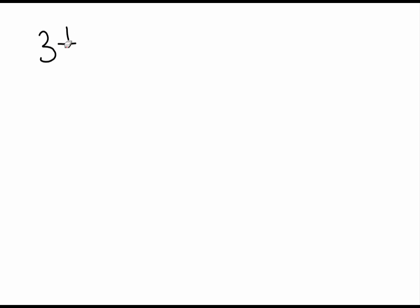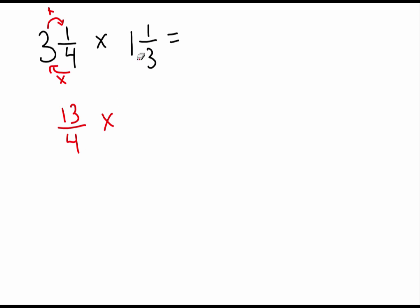Let's do another example using a mixed fraction. We've got three and one fourth multiplied by one and one third. First, convert both mixed fractions to improper fractions: four times three is twelve, plus one is thirteen, so we get thirteen over four. Then three times one is three, plus one is four, giving us four thirds.